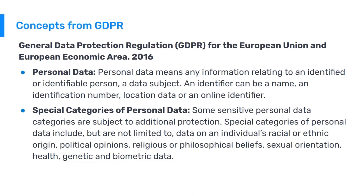One of the key concepts is personal data: any information relating to an identified or identifiable person, a data subject. An identifier can be a name, an identification number, location data, or an online identifier. There are special categories of personal data requiring additional protection, including data on an individual's racial or ethnic origin, political opinions, religious or philosophical beliefs, sexual orientation, health, genetic, and biometric data. In health information systems, various parts of these special categories are often relevant, so you must stay compliant with existing regulations and restrict access to any such data.